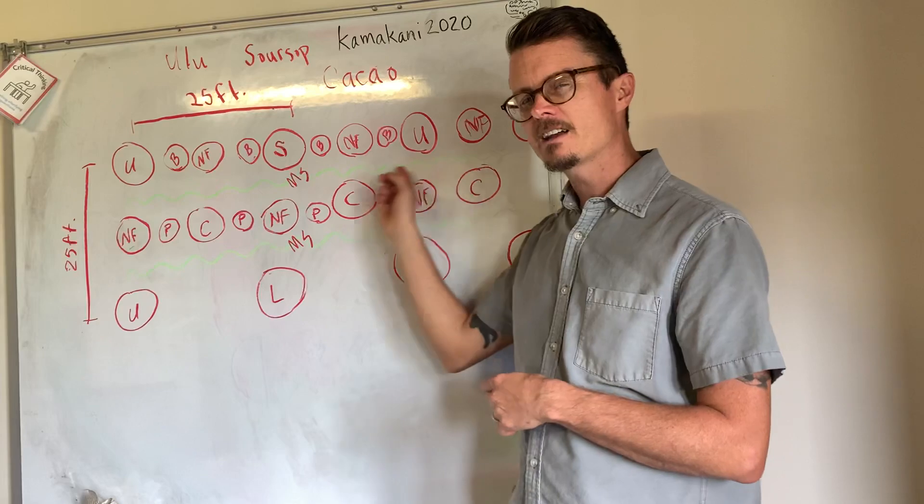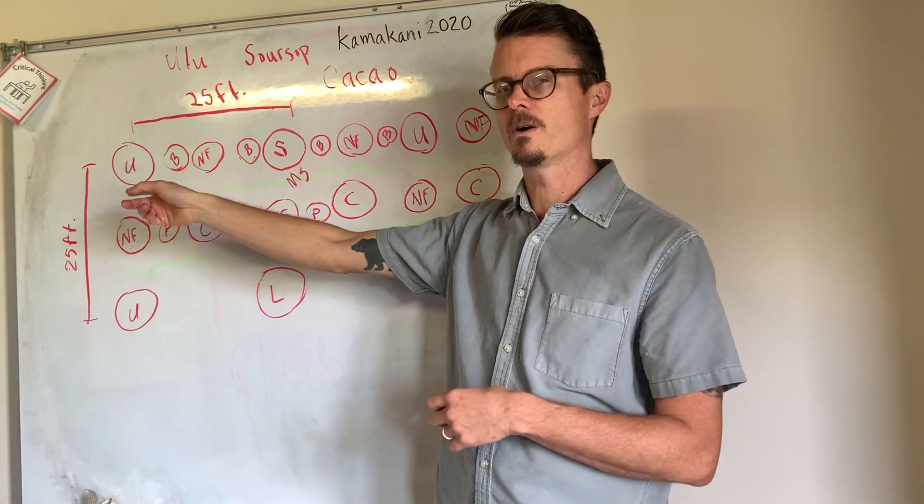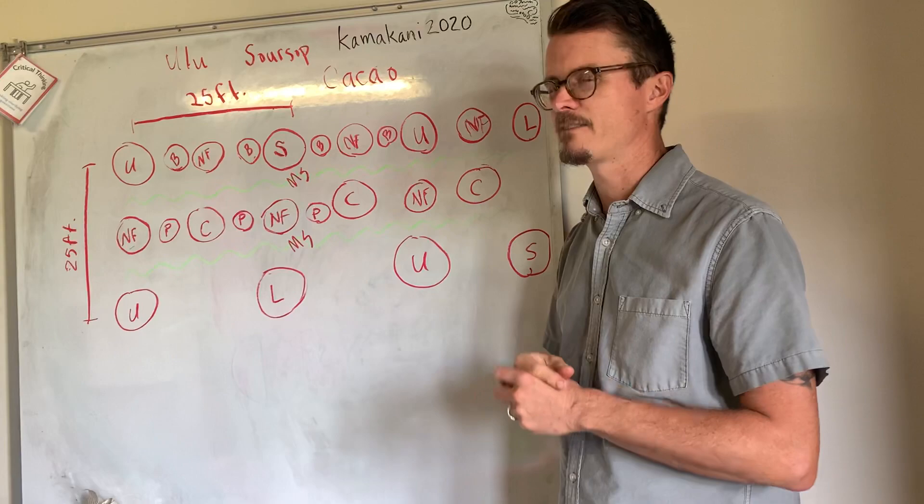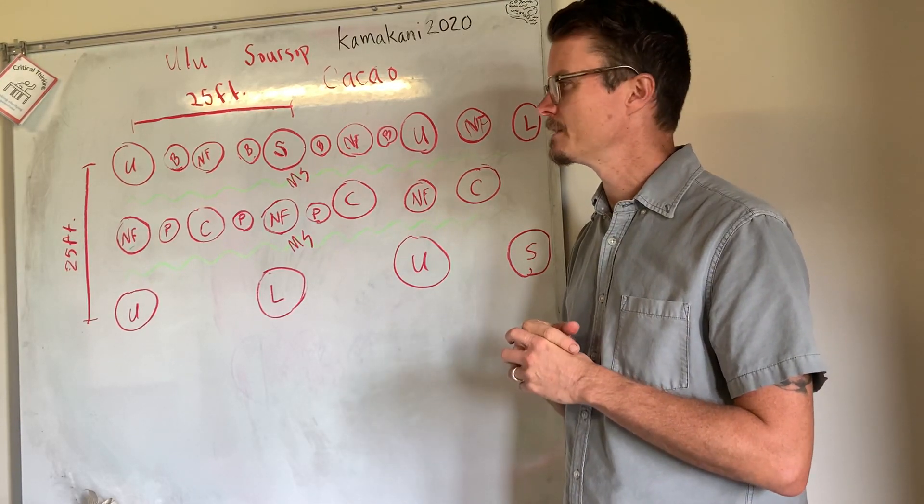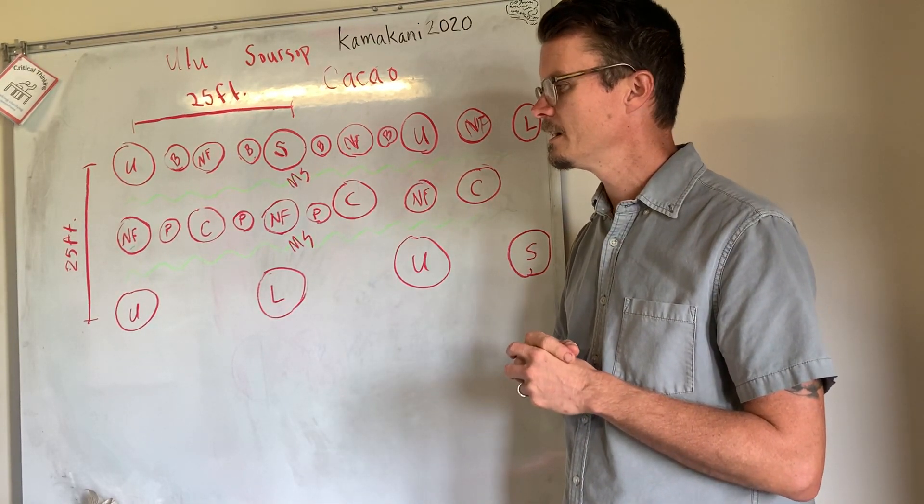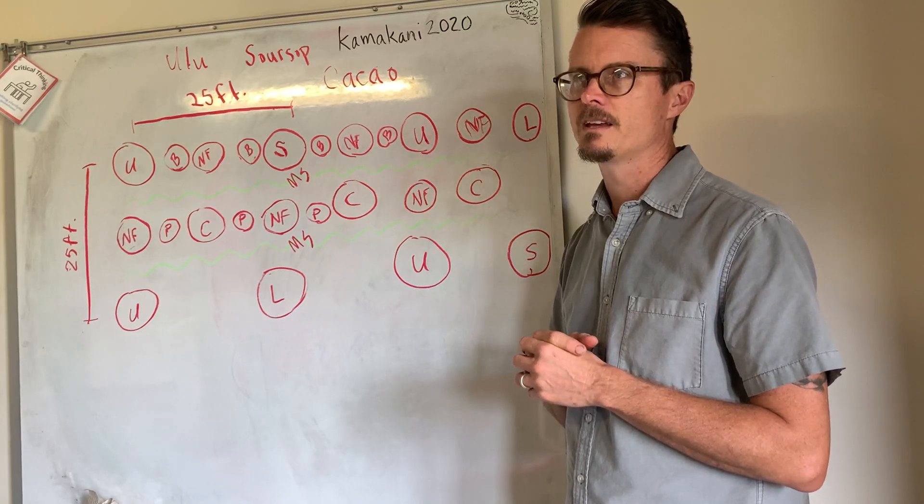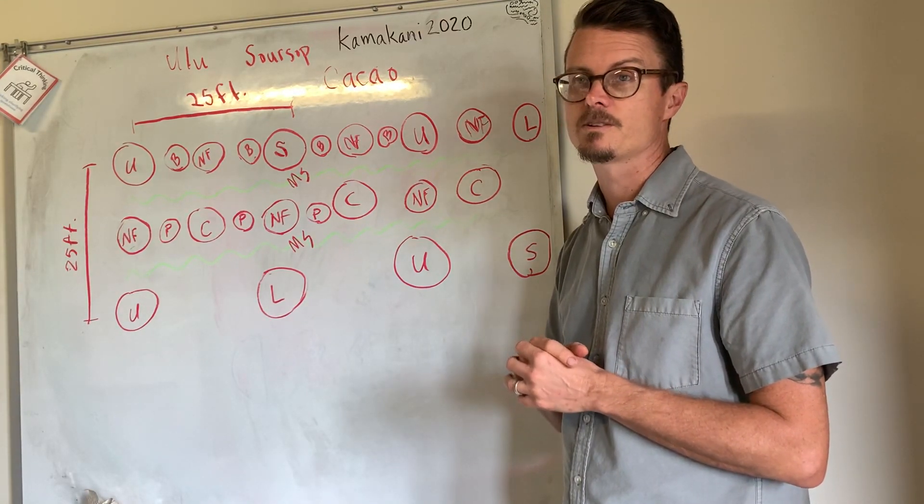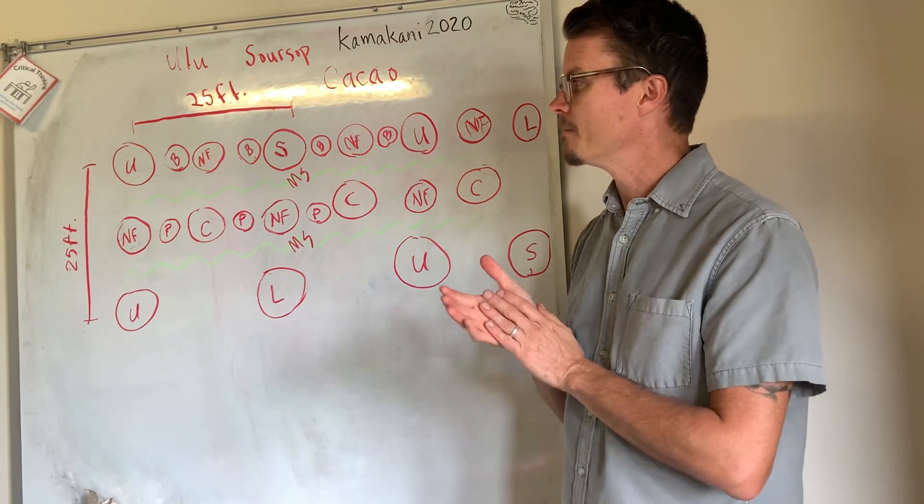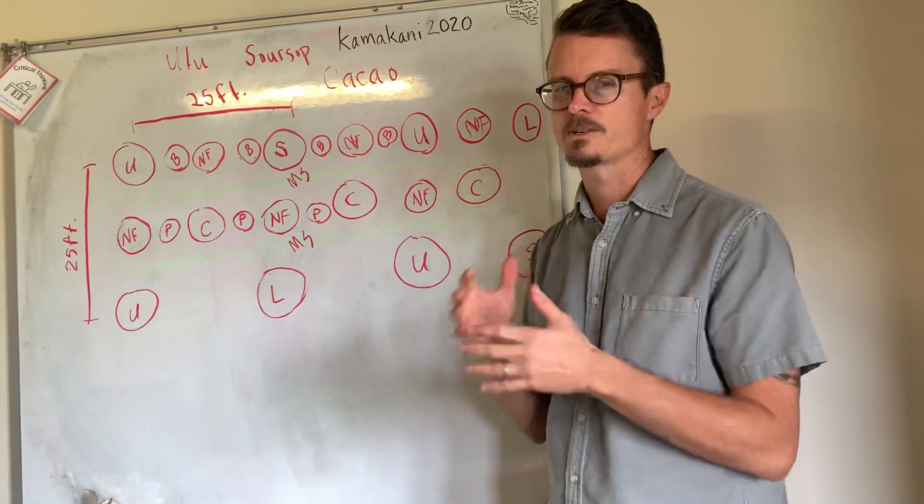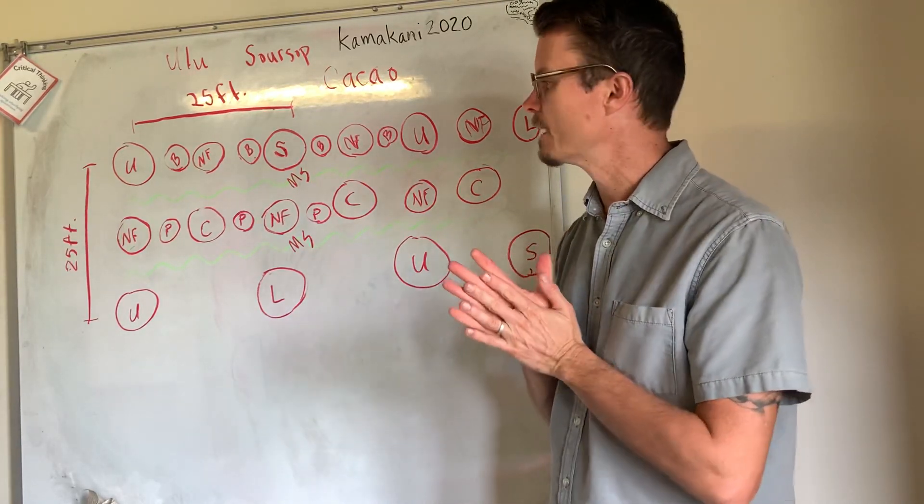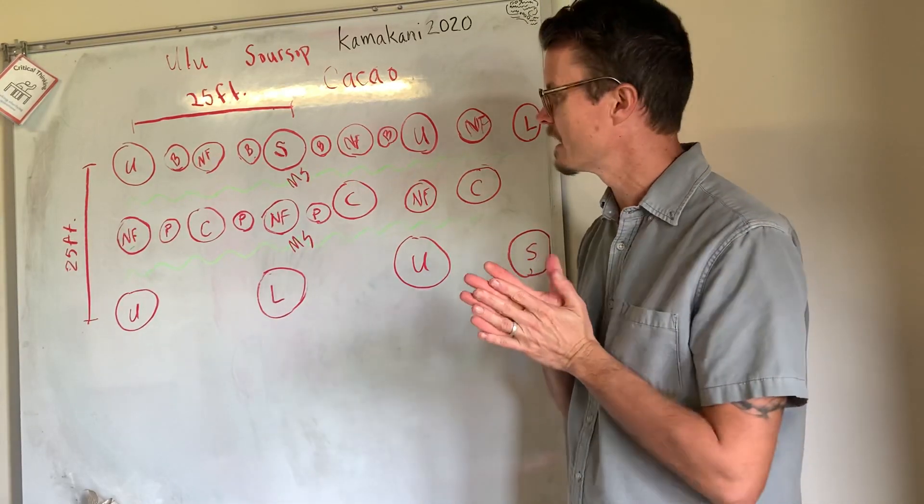We're going to be running irrigation lines all the way through here. I haven't decided if I'm going to irrigate the Mexican sunflower or not. I may just leave it to kind of fend for itself because I've noticed that here without irrigation it doesn't die, it just sort of stops growing. But it might be worth it to me to not have to use all that extra water. I'm kind of playing around with that idea. So if you have any thoughts on that, let me know.